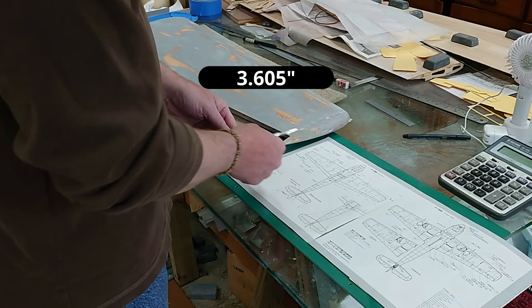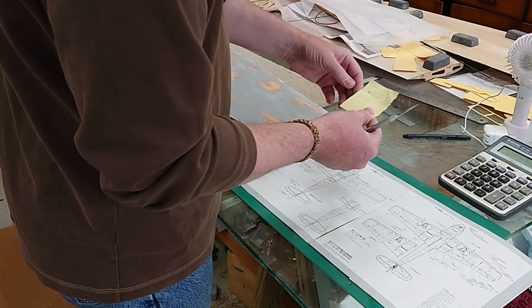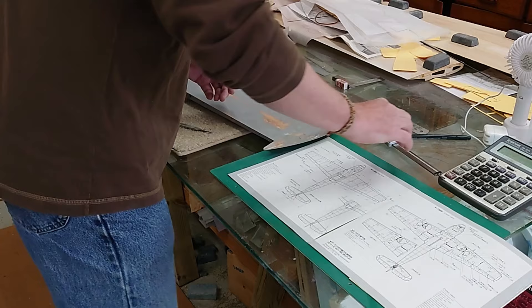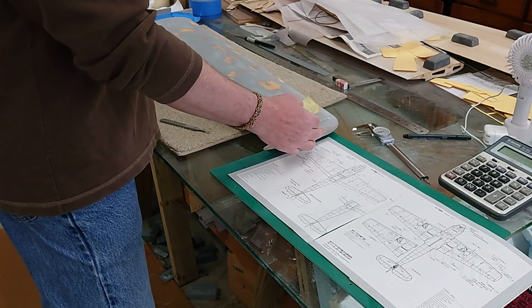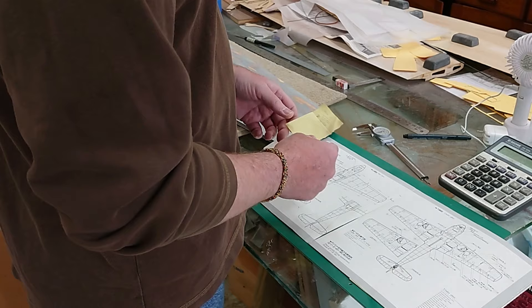And I measured the wing from the blue tape to the end, and that measured out to 30 inches and 13/32nds of an inch. So, taking the wingspan, 30 inches 13/32nds of an inch, dividing that by this 3 inches 605 thousandths of an inch gives us a scale factor of 8.43.